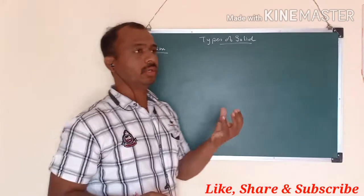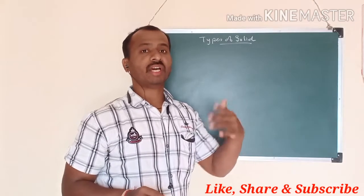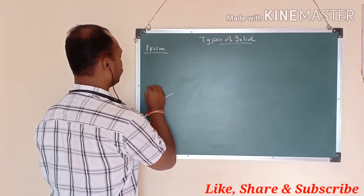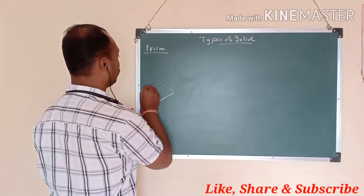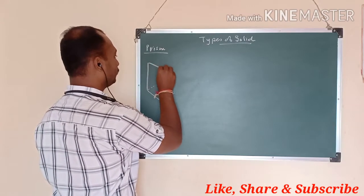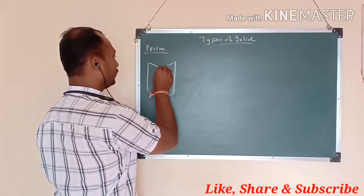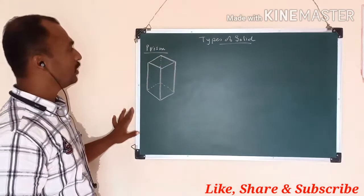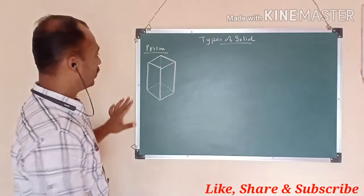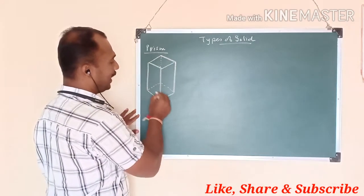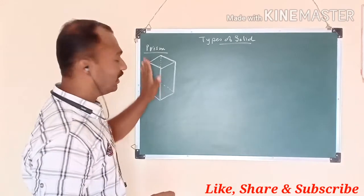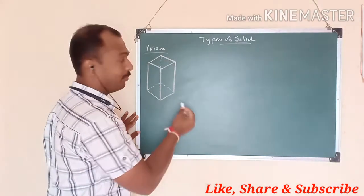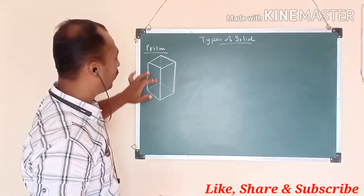A prism has its base shape and top face shape both the same. I will draw one prism here. This is the prism — it is called a square prism. This prism has its top face and base both the same, and its side faces are rectangles. If it is a square prism, then its top face and base will be square.